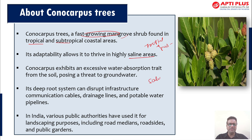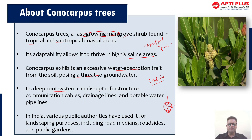An important feature of this plant is that it can thrive in saline areas. It exhibits excessive water absorption, which depletes groundwater. It is also a deep-rooted plant which can disrupt infrastructure, communications, cables, drainage, and potable water pipelines.